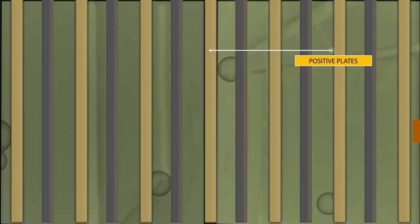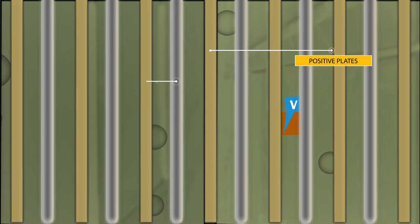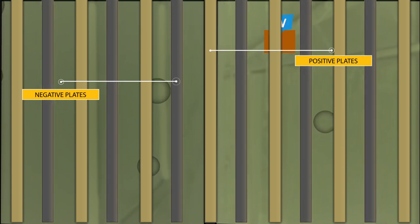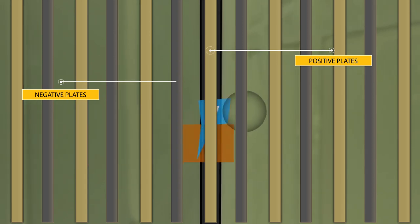The electrolyte sulfuric acid in water contains charged ions of sulfate and hydrogen. The sulfate ions are negatively charged and the hydrogen ions have a positive charge. Here's what happens when you turn on a load like headlights or the starter.